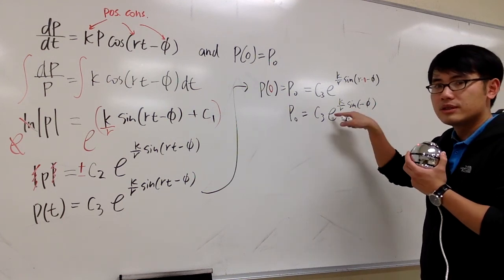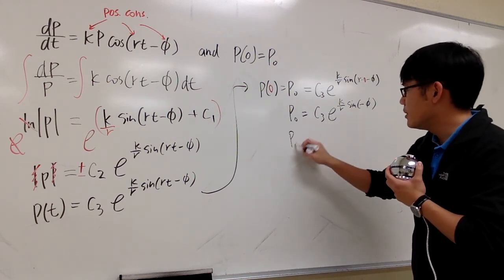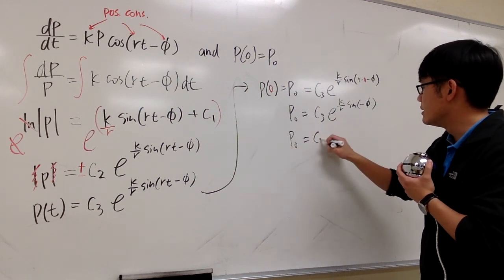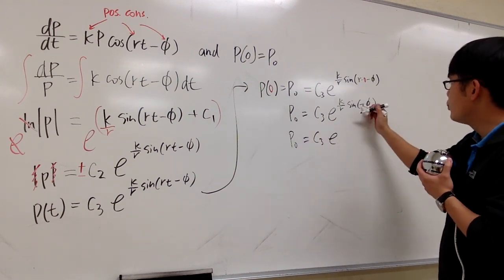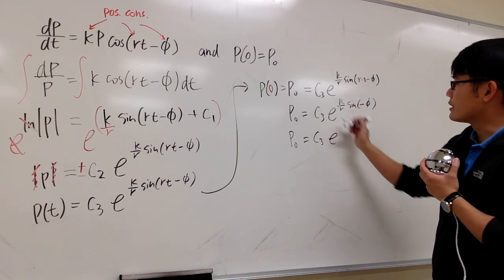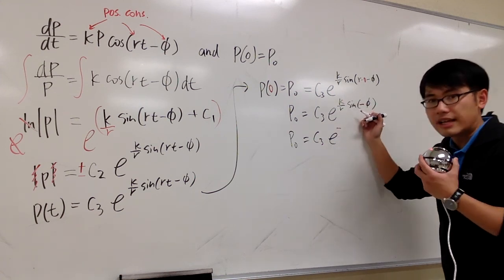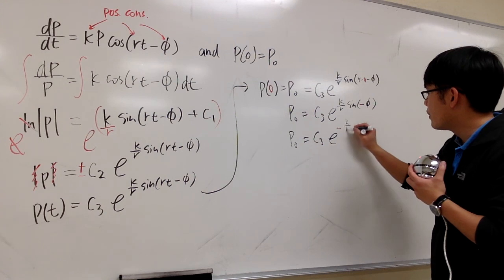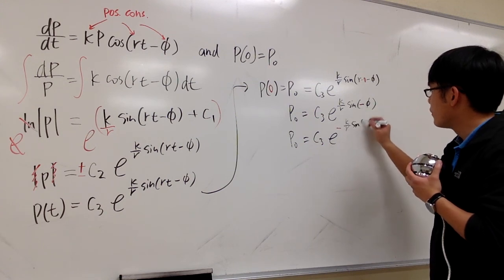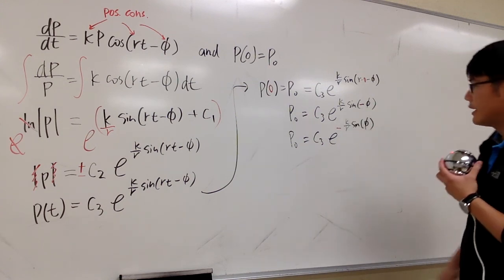And because we have sine of a negative number, I can take the negative out. So this is the same as saying, p0 on the left-hand side still, this is c3 e to the, let me bring this negative to the outside. I can do that because sine is an odd function. So we have k over r, sine of v.